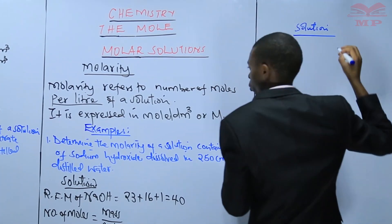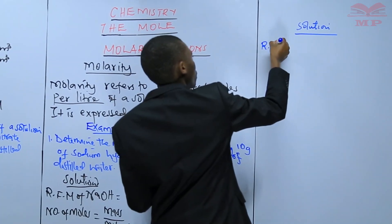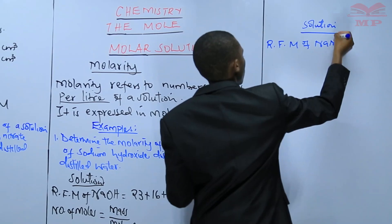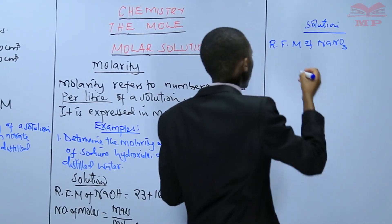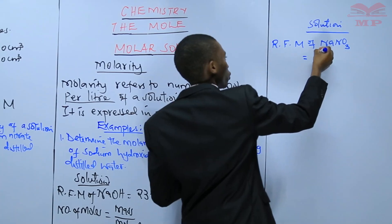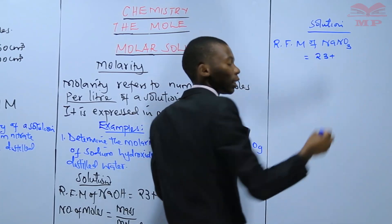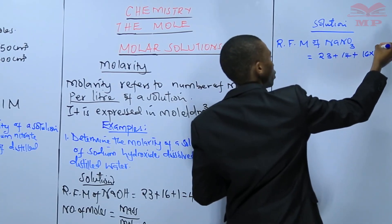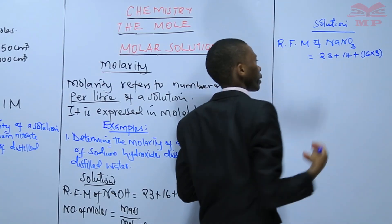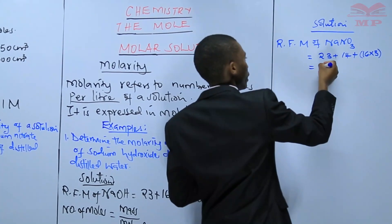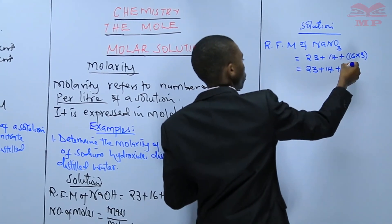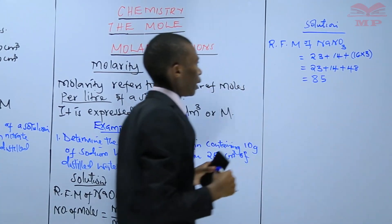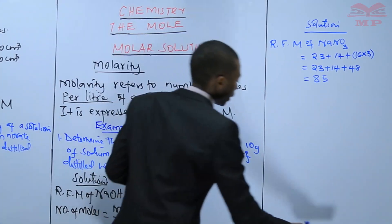We have first to determine the relative formula mass of sodium nitrate, which is given by the mass of sodium — 23 — plus the mass of nitrogen — 14 — plus the mass of oxygen, which is 16, but there are three atoms, so 16 times 3. This is 23 plus 14 plus 48, which gives us 85. The relative formula mass of sodium nitrate is 85.